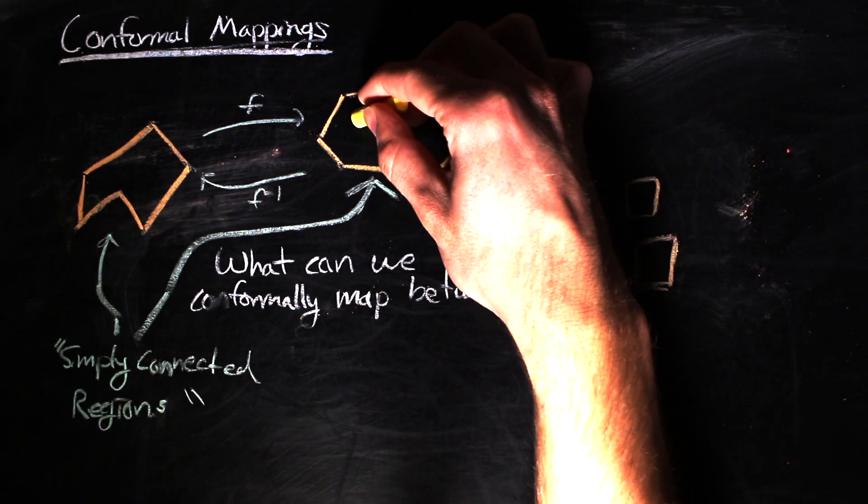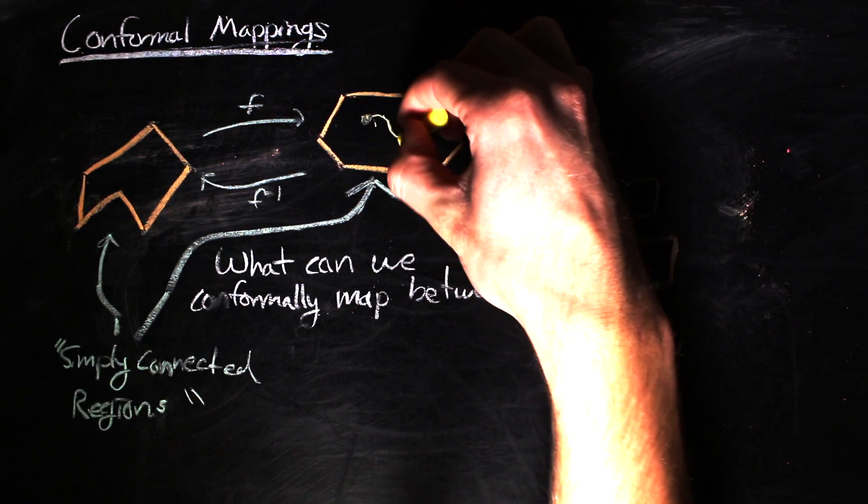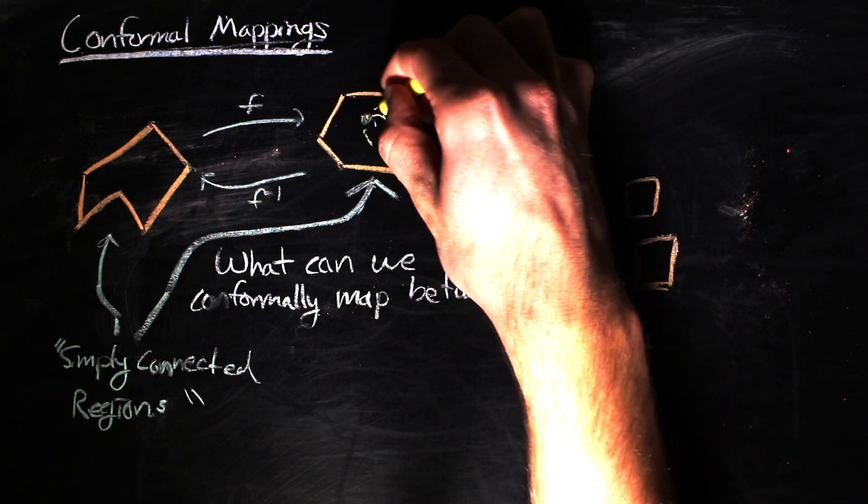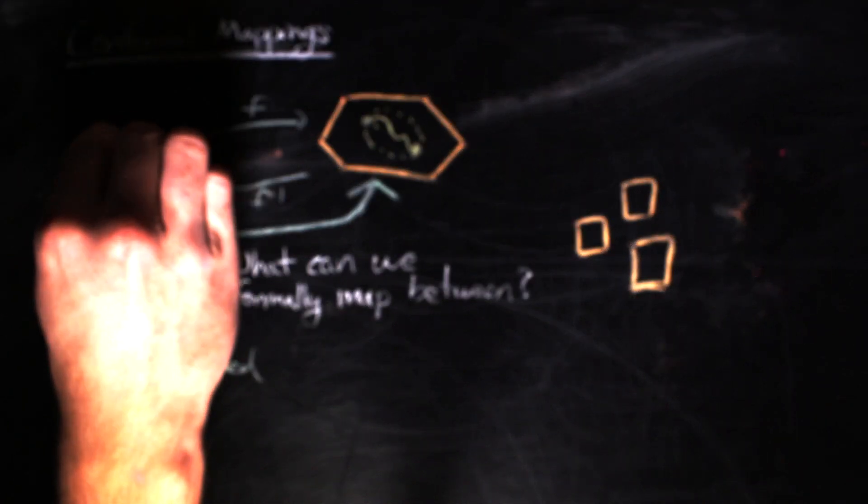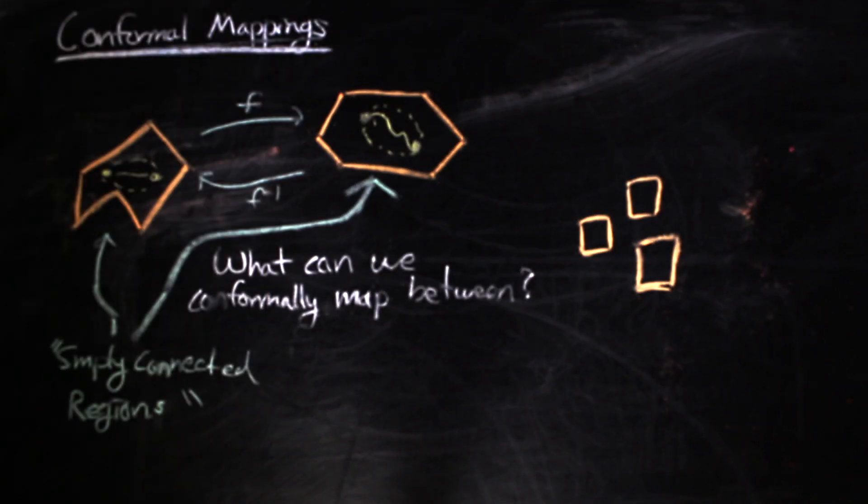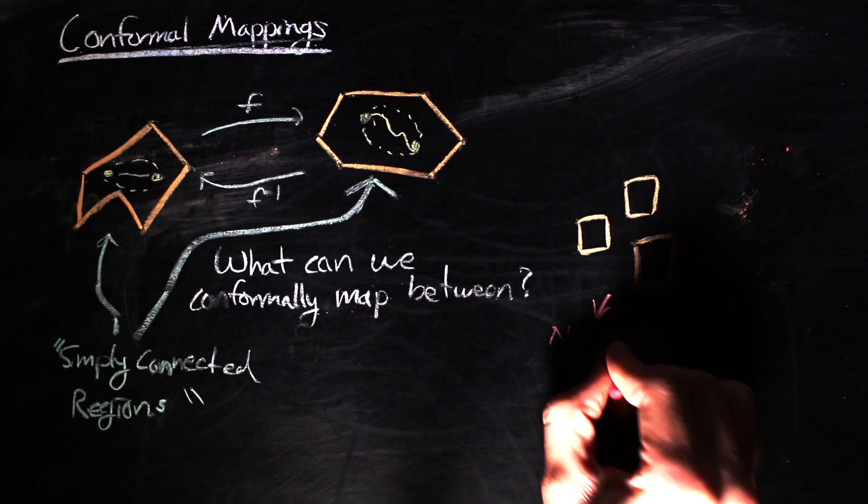Simply connected for us just means that you can take a path in the space to go from one point in the space to any other point in the space, and there's a bit of freedom to how you choose that path. So this is simply connected and this is not.